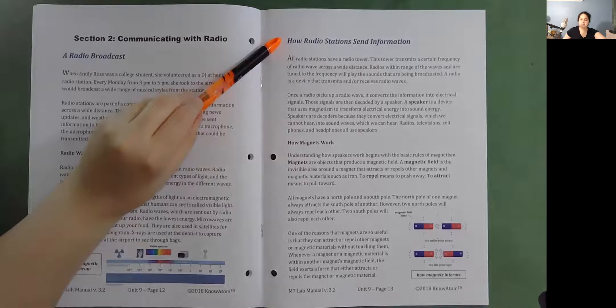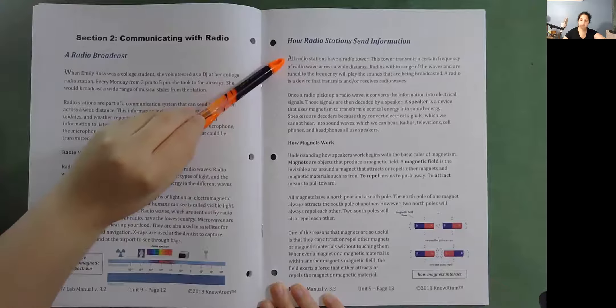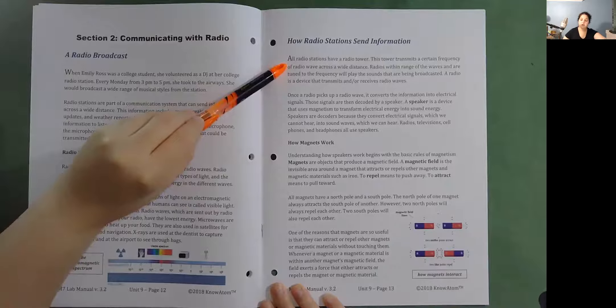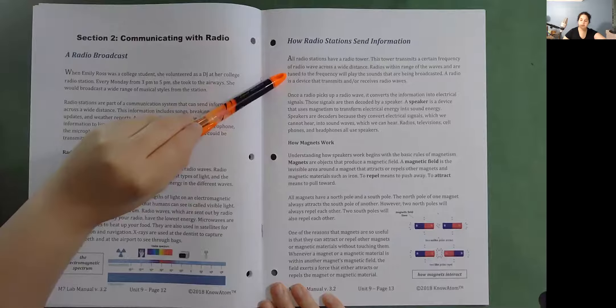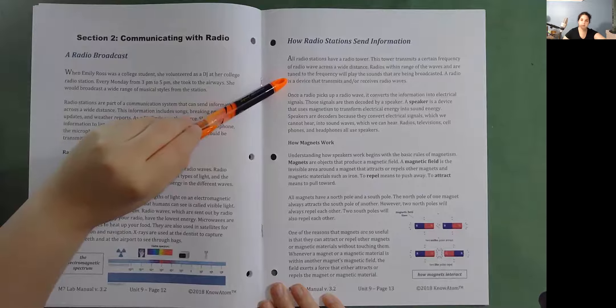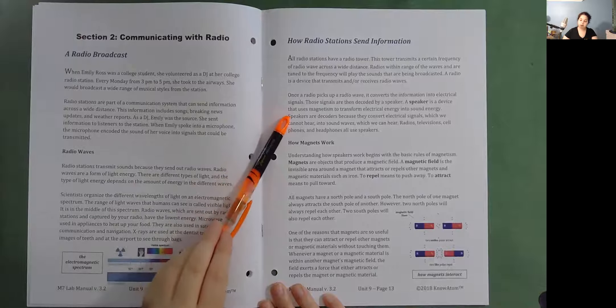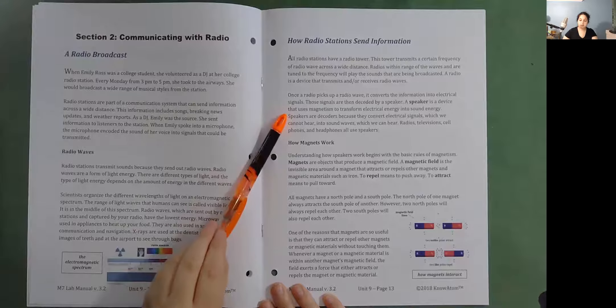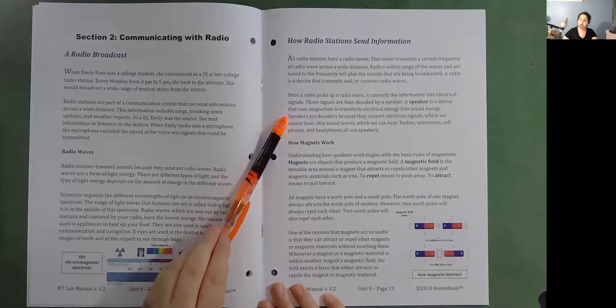How radio stations send information. All radio stations have a radio tower. This tower transmits a certain frequency of radio wave across a wide distance. Radios within range of the waves and are tuned into the frequency will play the sounds that are being broadcasted. A radio is a device that transmits and or receives radio waves. Once a radio picks up a radio wave, it converts the information into electrical signals. Those signals are then decoded by a speaker. A speaker is a device that uses magnetism to transform electrical energy into sound energy. Speakers are decoders because they convert electrical signals, which we cannot hear, into sound waves, which we can hear.